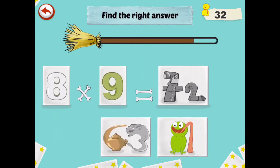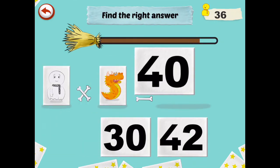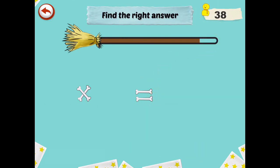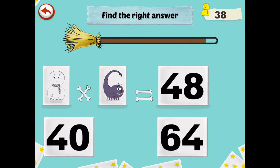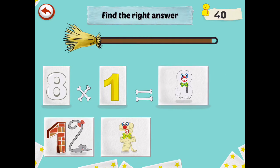8 times 9 is 72. 8 times 5 is 40. That gives us another 2 points. We almost filled up the broom. 8 times 6 is 48. Oh. One more question. 8 times 1 is 8.